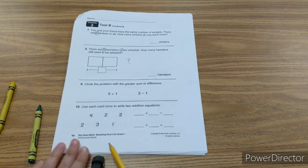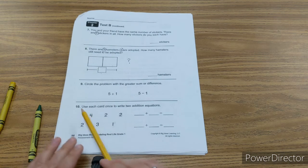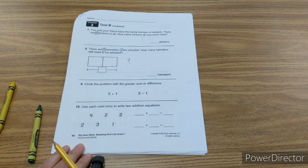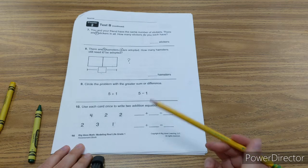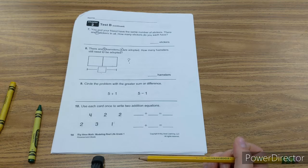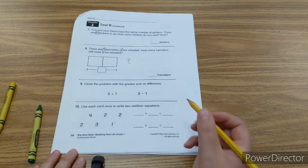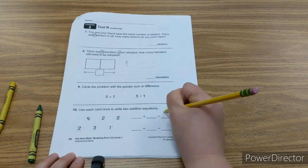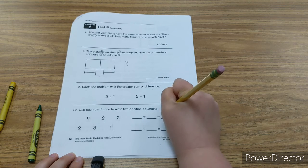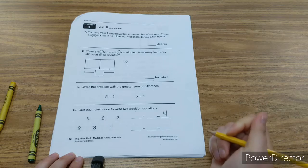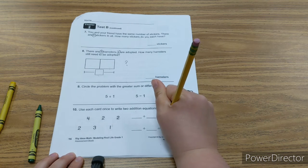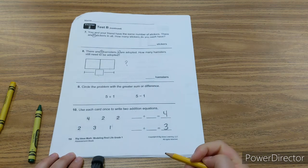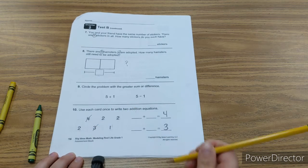Your very last problem on your test is use each card once to write two addition equations. I will give you the hint that four will go here and three will go here. I want you to tell me the addends for those equations.